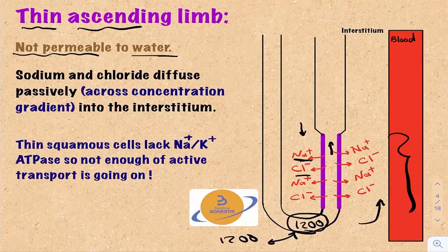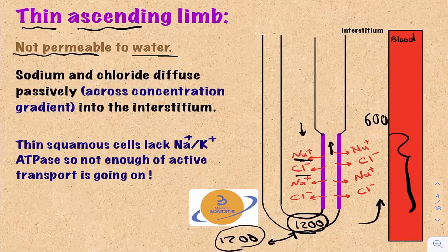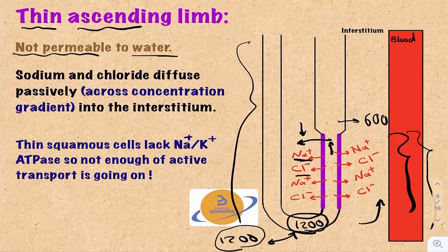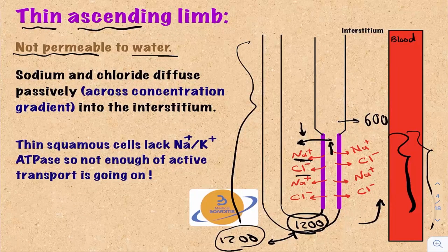As the filtrate ascends from, say, 1200 down to 600 mOsm, the concentration inside the tubules is much higher than outside, so solutes move passively from the lumen into the interstitium. This is passive transport — the thin ascending limb, like the thin descending limb, is lined by squamous epithelial cells that lack mitochondria, organelles, and transporters like the Na-K ATPase needed for active transport.